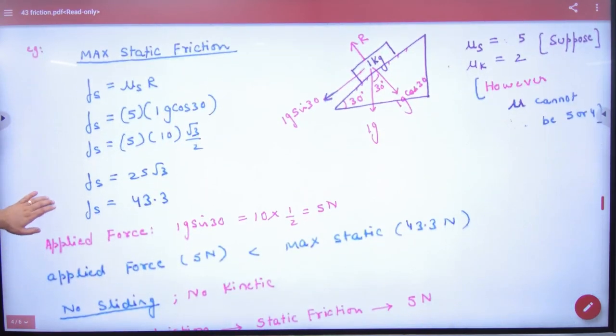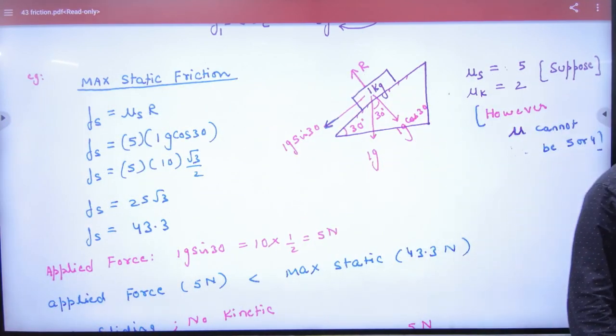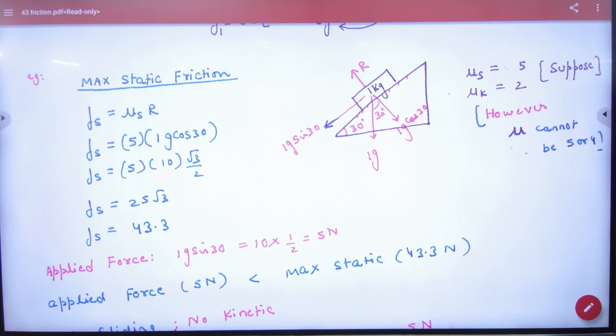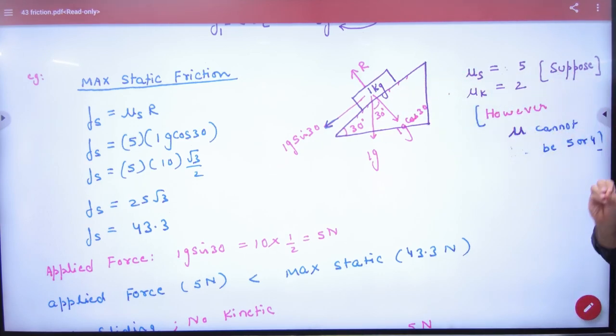Now suppose it is an inclined plane. It is 1 kg object. Mu s and mu k given. However, there are not so big values. Mu s is 0.5 and mu k is 0.2. So suppose, given. So in this case, this body will run or not. Let's decide.